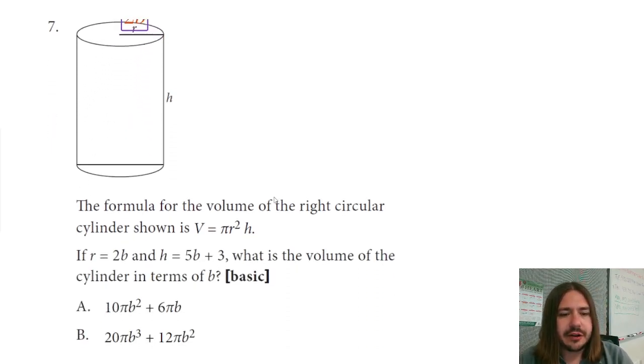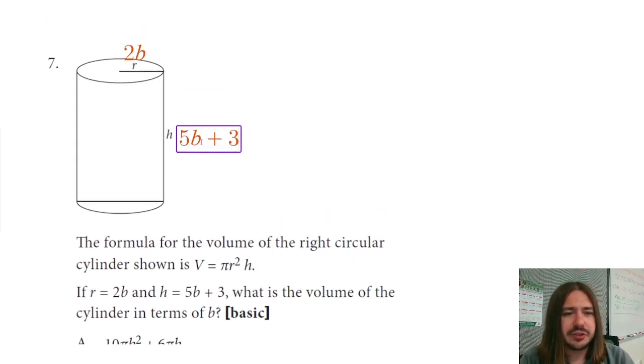And then scrolling back down here, it says the height, or h, is 5b plus 3. What is the volume of the cylinder in terms of b? So really, this is just going to be a matter of us substituting these two expressions into the volume formula and then probably simplifying.